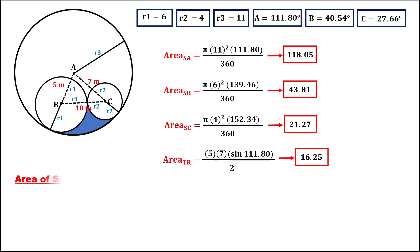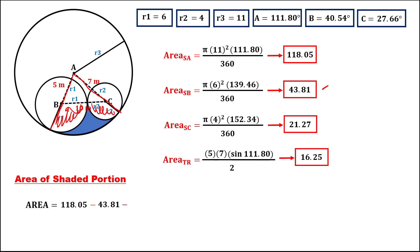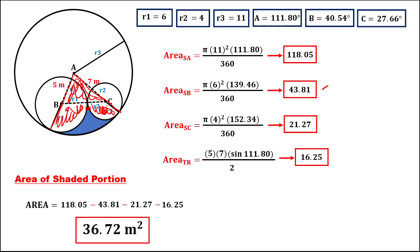Now we can find the area of the shaded portion. Area equals sector A minus sector B minus sector C minus the triangle: 118.05 minus 43.81 minus 21.27 minus 16.25. Therefore, the area of the shaded portion is 36.72 square meters.